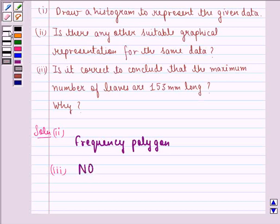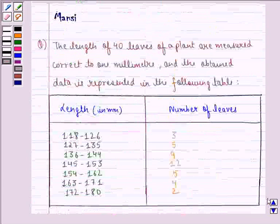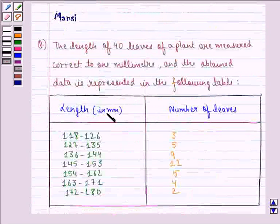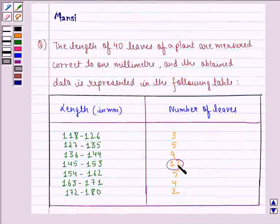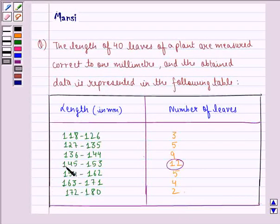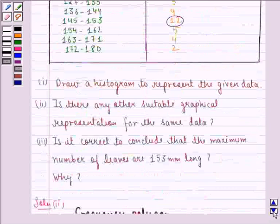Now let us see why this happens. It is given to us in the data that the length in mm when it is 145 till 153 then it is 12. So this leaf can be anywhere between 145 and 153. So our answer would be no.